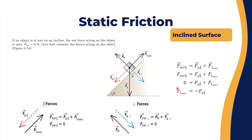Now let's take the static friction on an inclined surface. Sometimes you sit a box on an inclined surface that has a certain angle of inclination, so the object is at rest. The net force acting on the object is zero, and we first examine the forces acting on the object with a free body diagram. We have the F normal, the F gravitational, the component of F gravitational, and the F static, which is always against the expected direction of motion.